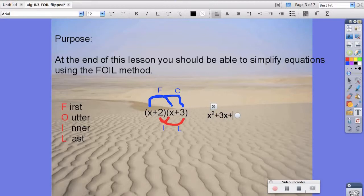Our inner is 2 times x, which is 2x. And our last is 2 times 3, which is 6. From here we can simplify and say we have x squared plus 5x plus 6.